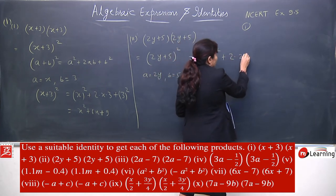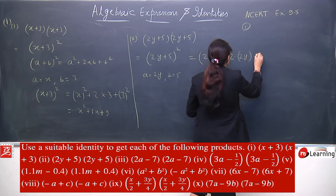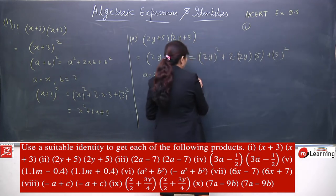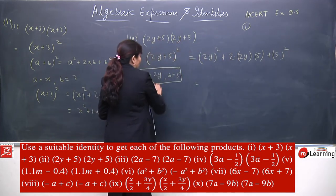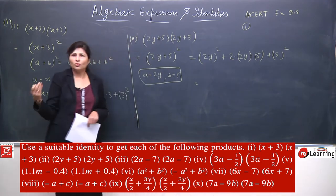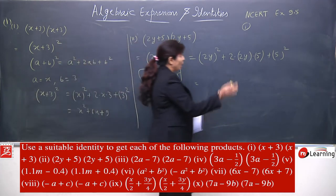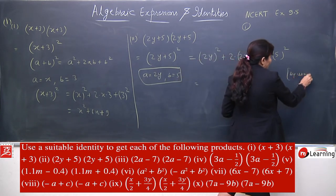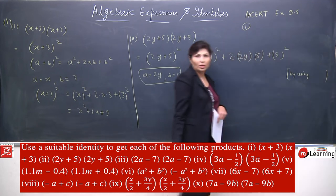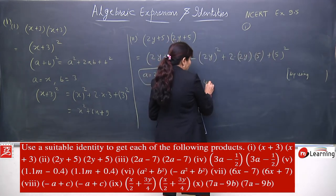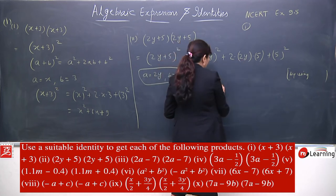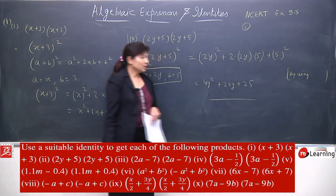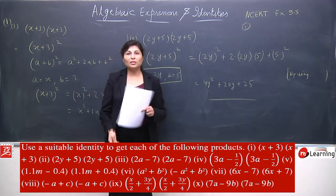Second is (2y+5)(2y+5) — which is (2y+5) whole square. Here a is equal to 2y and b is equal to 5. Directly applying the identity: a square plus 2ab plus b square. When you do this, you must also write the identity name — 'by using' whichever identity you are applying. (2y)² is 4y², 2 times 2y times 5 is 20y, plus 25. Question solved very simply after identity.